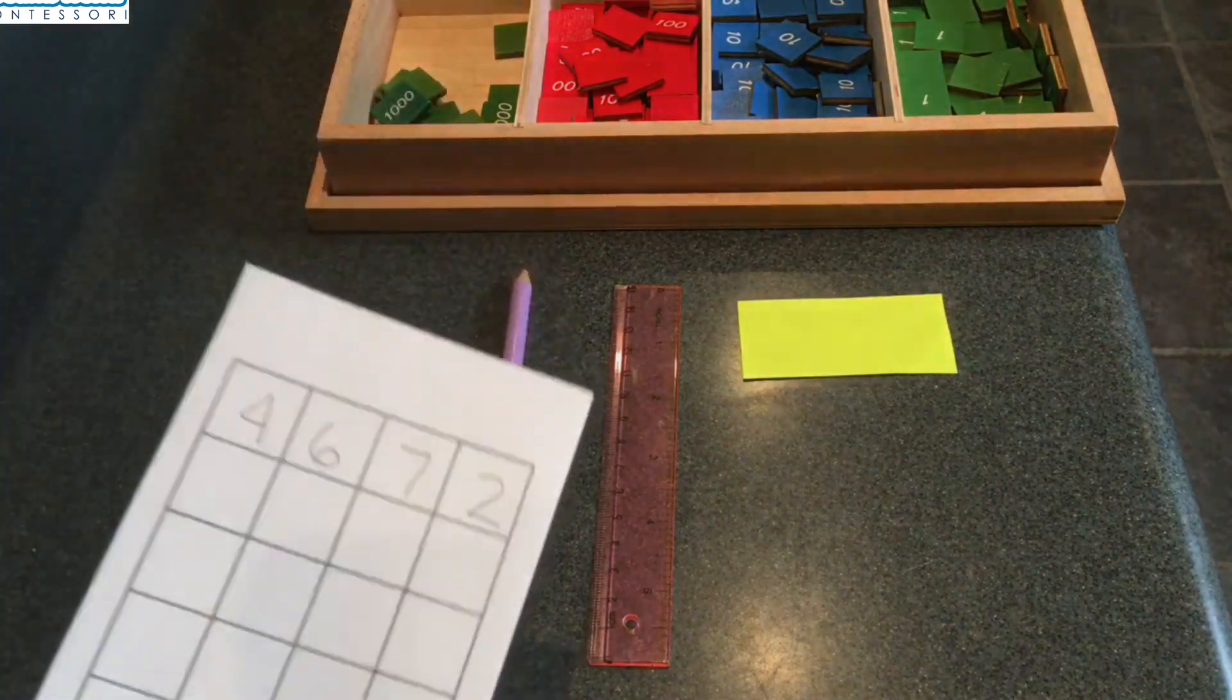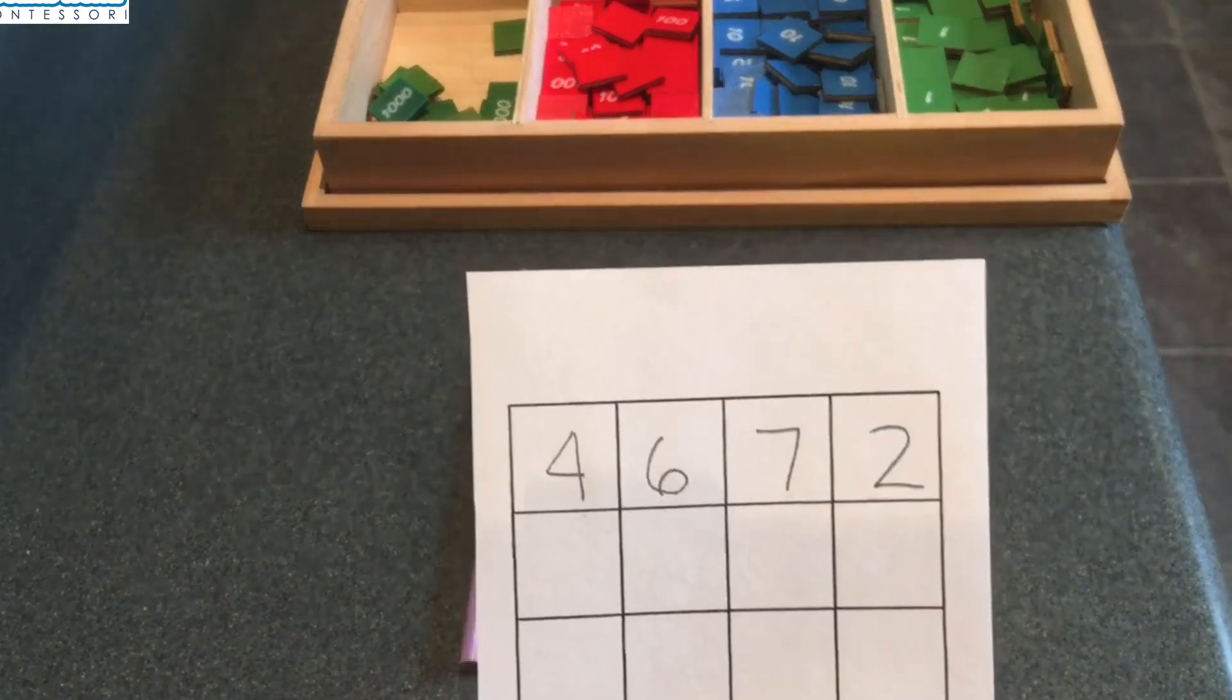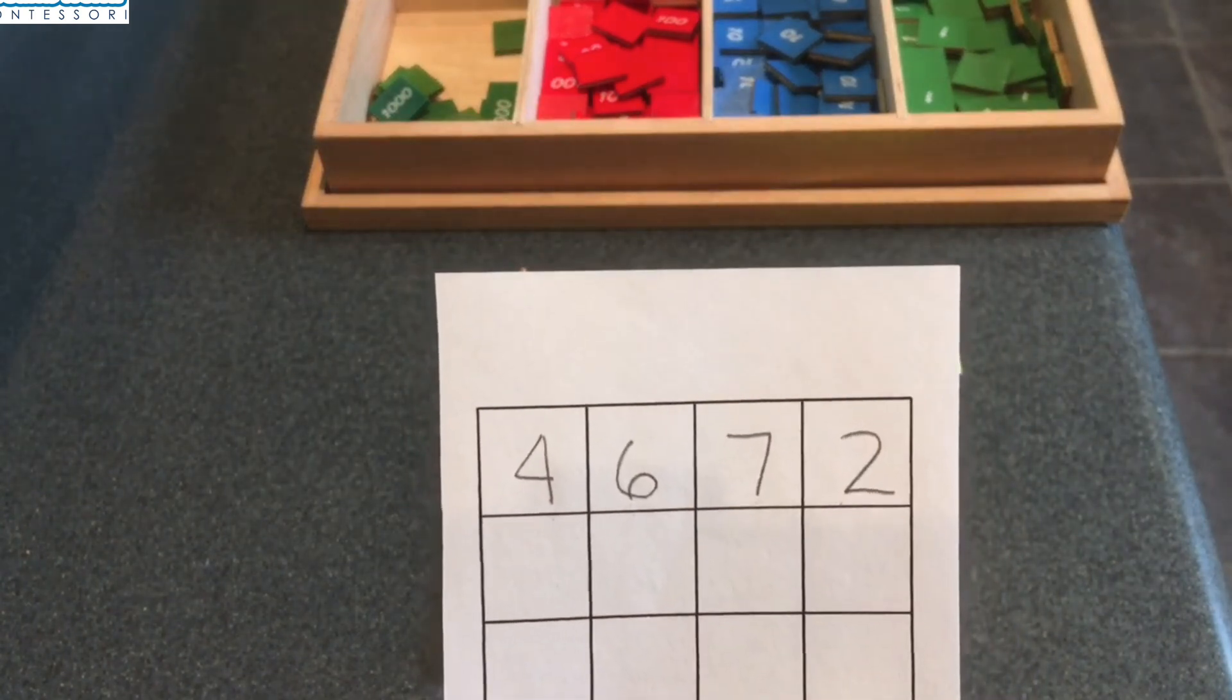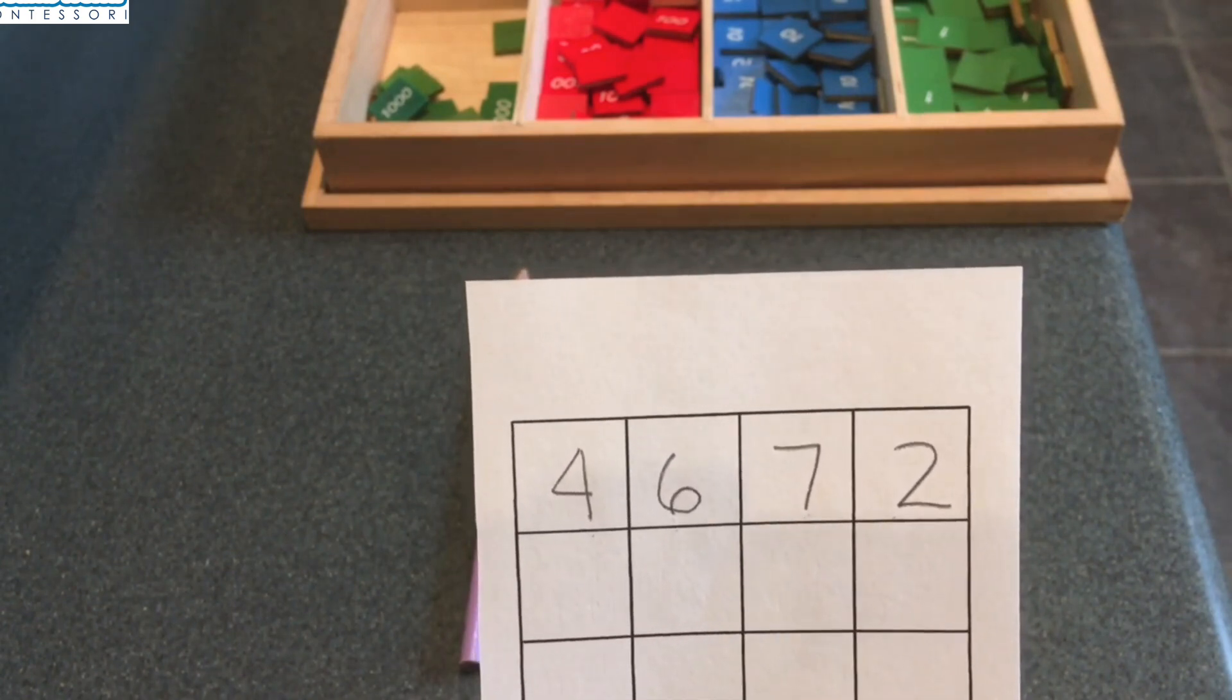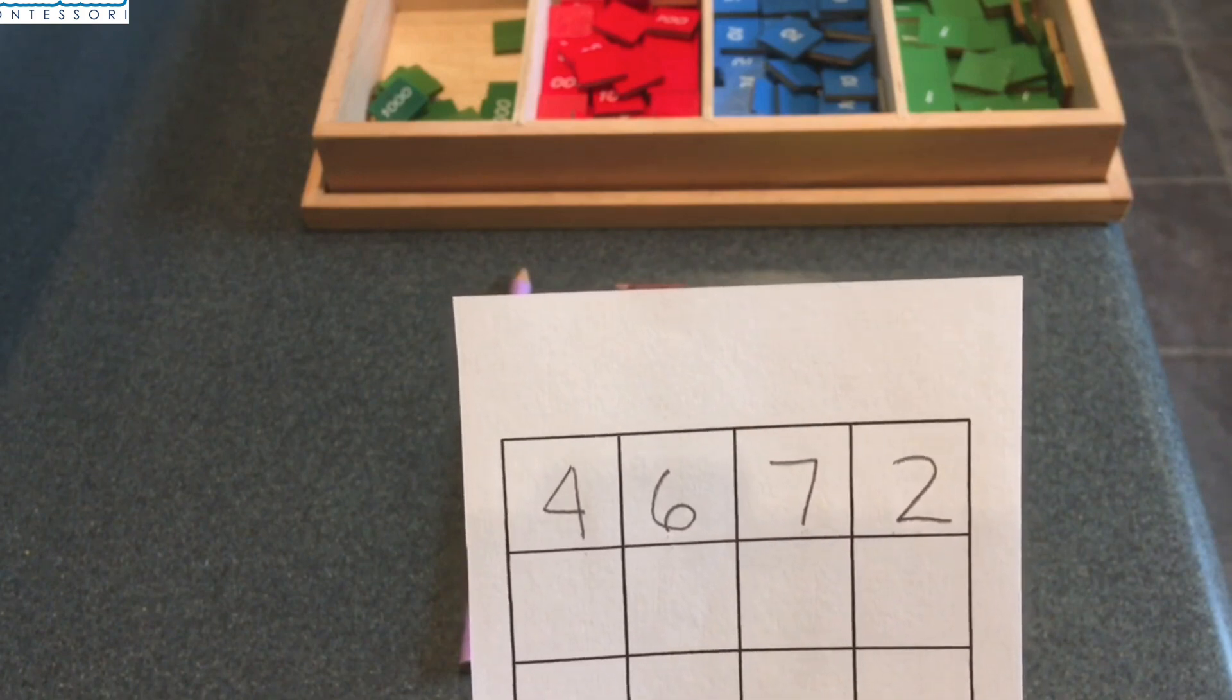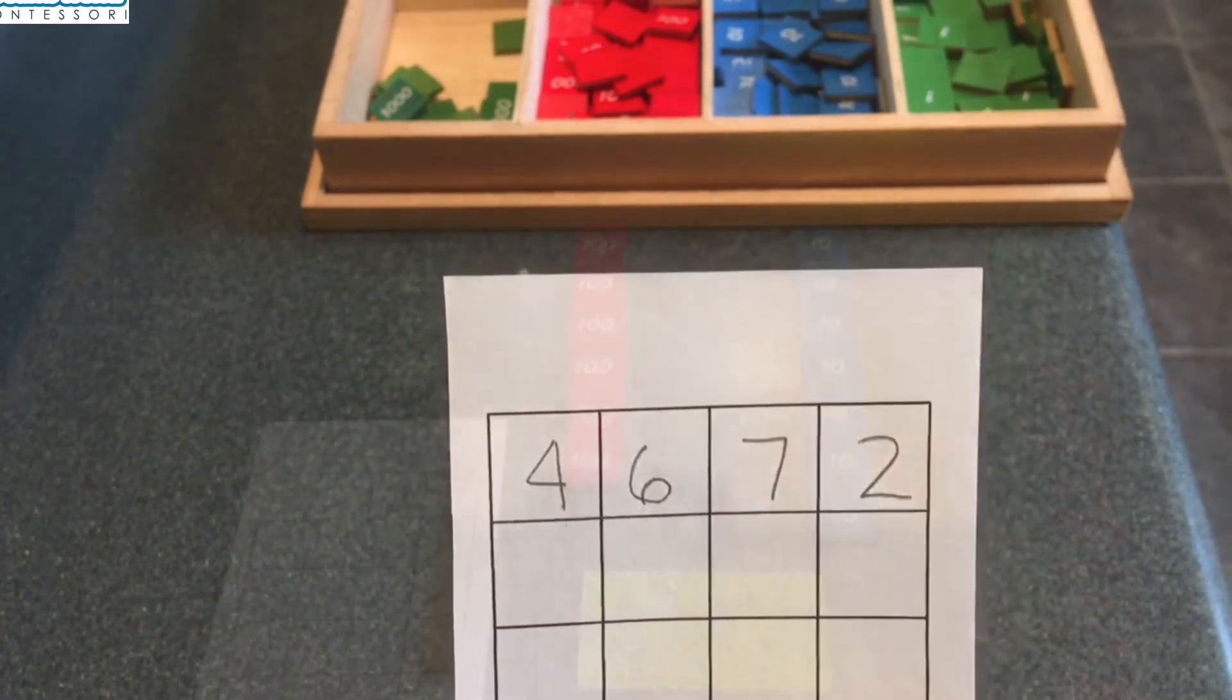Just like with addition, we're going to write our numbers on the paper. I wrote 4,672. You can write this on your paper as well. Once you've written 4,672 on your paper, pause right here so that you can build your number. I'll build my number too.